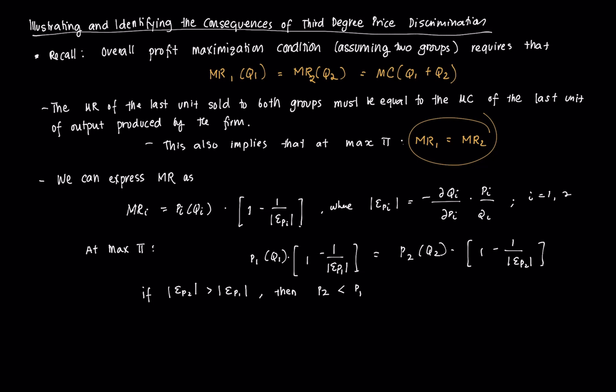From the last module we said we could re-express marginal revenue as equal to the demand function times (1 minus 1 over the price elasticity), where the price elasticity could be for group one or group two. We know that the price elasticity is always negative, which is why we take the absolute value of it.